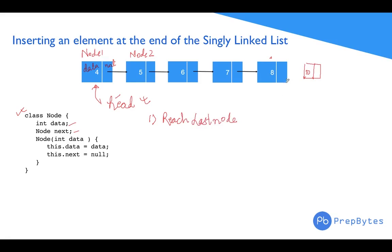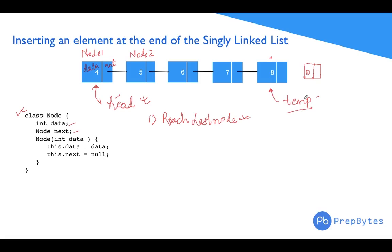Let's say we keep a temp variable pointing to the last node. The 'reach last node' step will bring temp to the last node. Once temp is at the last node, we have to make sure the next of that node points to the newly created node. So the three steps are: reach the last node, create a new node, and update the next of the last node.